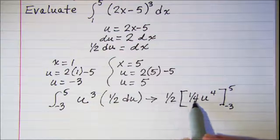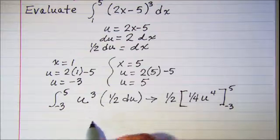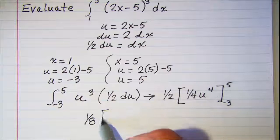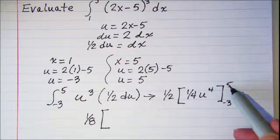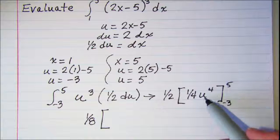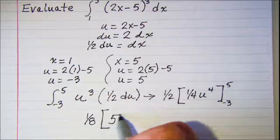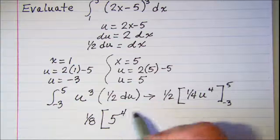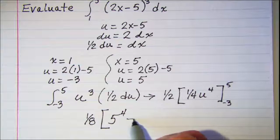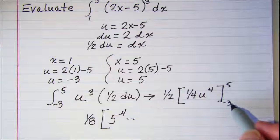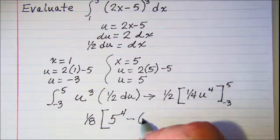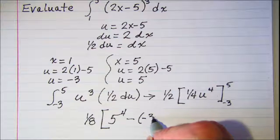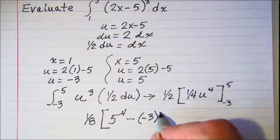This gives us one eighth times — plugging in 5, we get 5 to the fourth power, then subtract, plugging in negative 3, we get negative 3 to the fourth power.